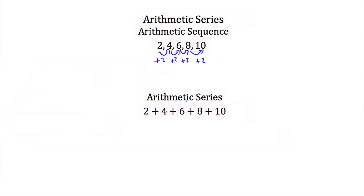Now, an arithmetic series is just an arithmetic sequence where all the terms are added together. So if we took this arithmetic sequence and turned it into a series, we would just take 2 and add it to 4, and then add it to 6, and then add 8, and then add 10.